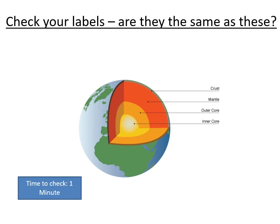Okay, just double check that you've got the correct order. The crust is the outer, thinnest layer of the earth. The mantle is the largest layer underneath that, and then you've got the two parts of the core: the outer and the inner core.